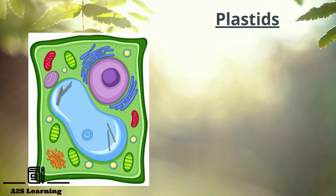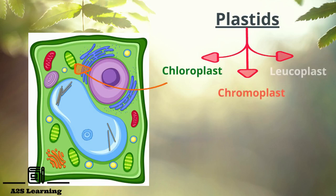Plastids: They are living double-walled structures and occur only in plant cells. There are three types of plastids: chloroplast, chromoplast and leucoplast.